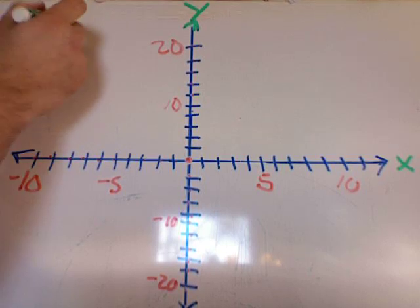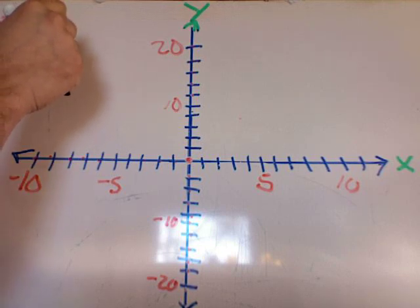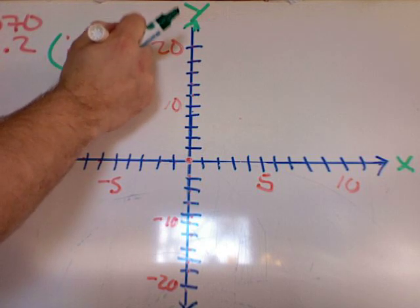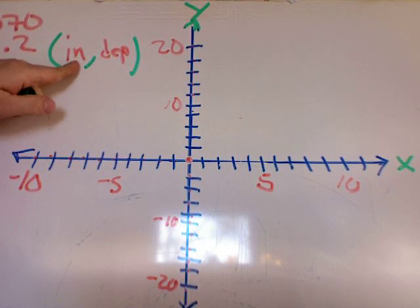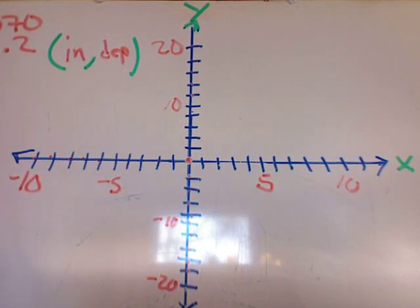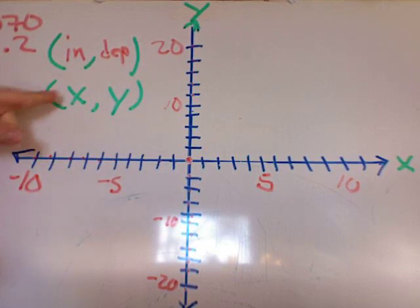Now, in a coordinate system, like I said, there are two points. We have these things called an ordered pair. In an ordered pair, we always put our independent variable first - in other words, the variable that's on our horizontal axis. In our case, it would be x, y. The x always comes first.